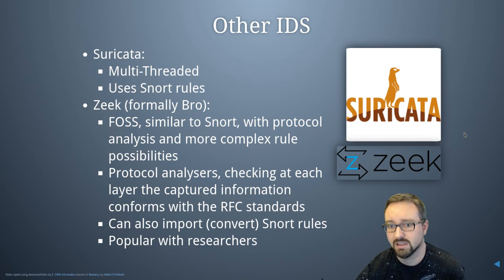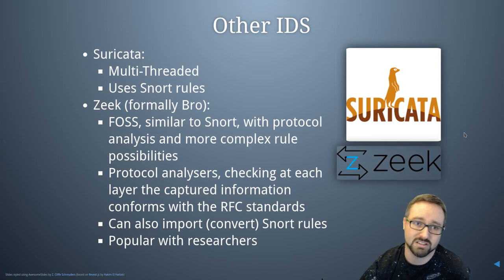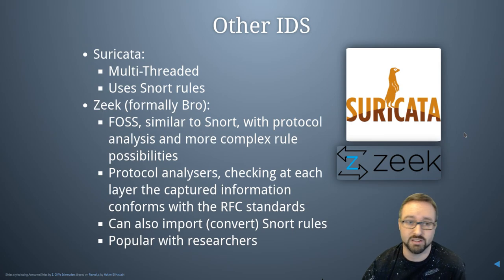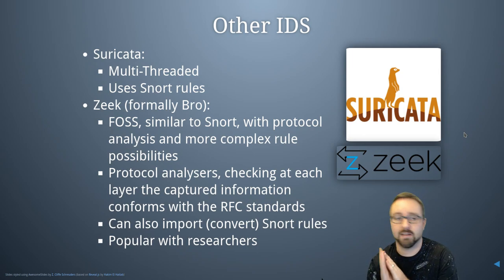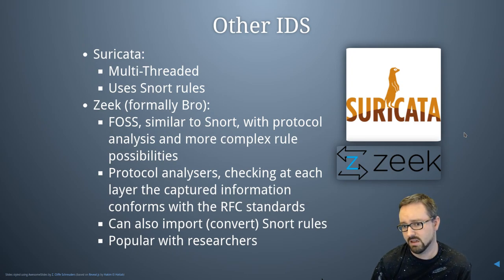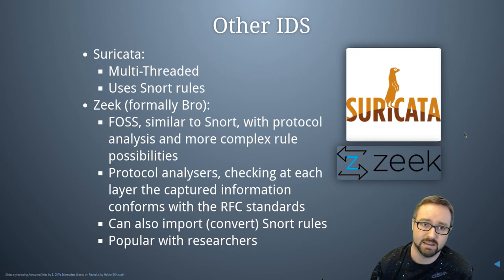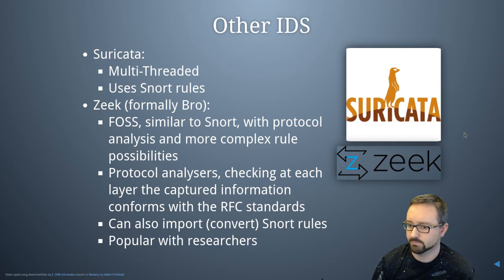There are other intrusion detection systems. Suricata is essentially very similar to SNORT but is multi-threaded and uses the same SNORT rule language, with the main advantage that it can use multiple CPU cores for faster processing. Zeek, previously known as Bro, is free and open source software similar to SNORT but does more protocol analysis and has more complex rule possibilities built in, with lots of plugins available.